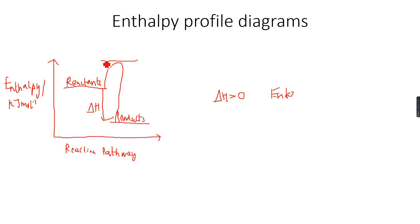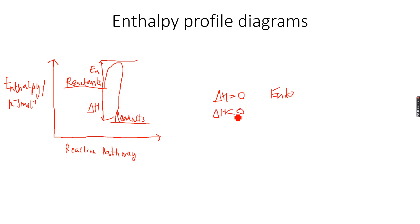Delta H is this energy difference, and the activation energy is shown with an upward arrow because it is a positive value — it is the energy you need to give to the system. The enthalpy change in this case is a downward arrow because energy is being released to the surroundings, and therefore delta H is less than zero. Delta H is negative because the products have less energy than the reactants — this is for an exothermic reaction.